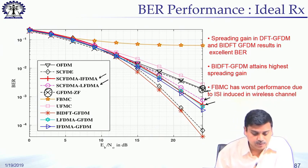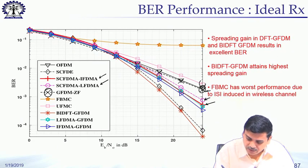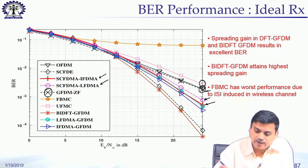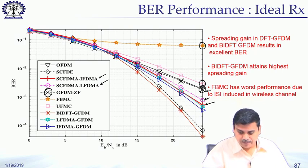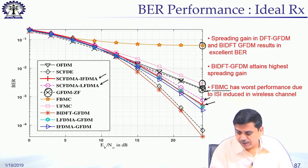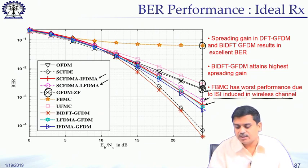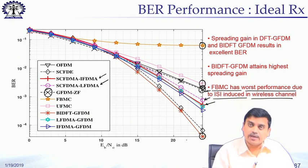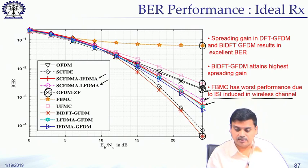GFDM with zero-forcing receiver matches OFDM performance — there is no loss in that sense. UFMC is relatively worse compared to these performances. Finally, FBMC has the worst BER performance due to ISI induced in the wireless channel. In contrast, BIDFT-M can provide the highest amount of diversity as well as SNR advantage compared to all other systems.